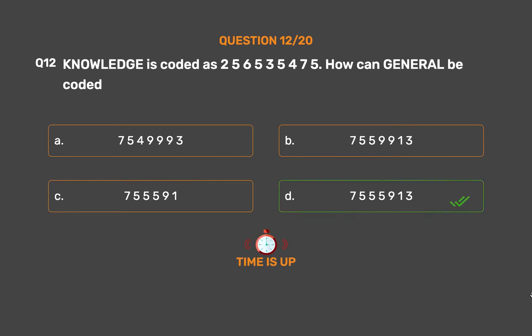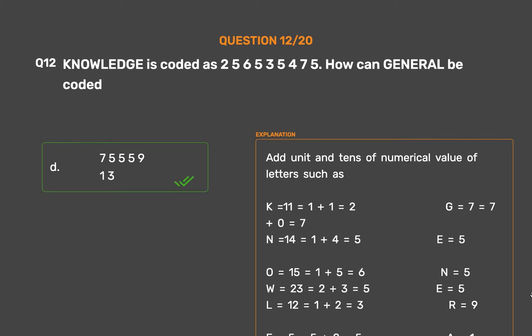The correct answer is Option D: 75555913. Add the units and tens digits of the numerical value of each letter: K=11→1+1=2, N=14→1+4=5, O=15→1+5=6, W=23→2+3=5, L=12→1+2=3, E=5→5, D=4→4, G=7→7, E=5→5, R=18→1+8=9.